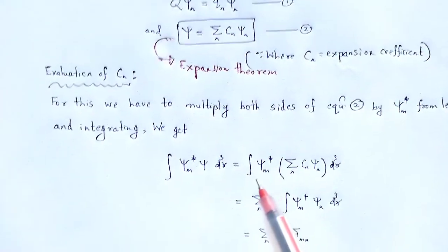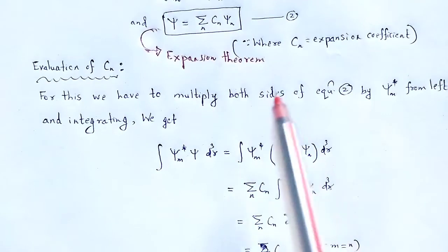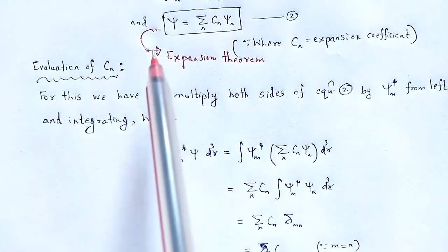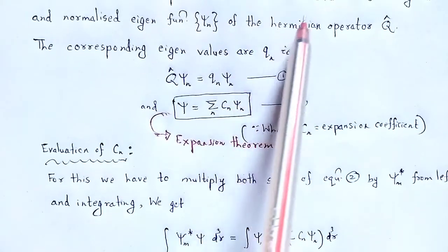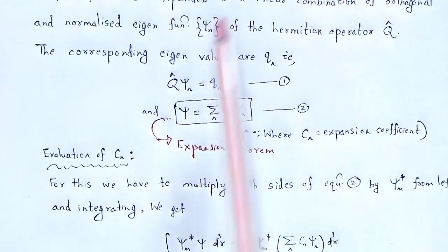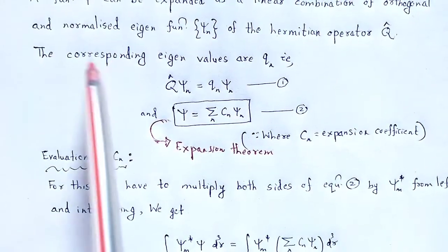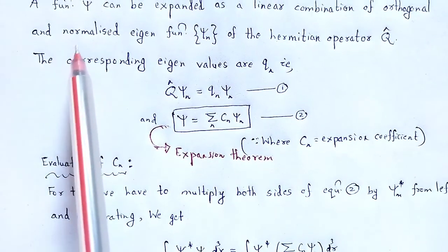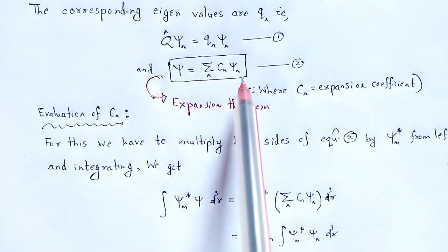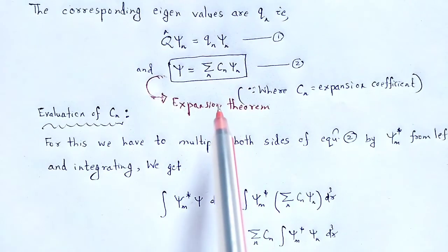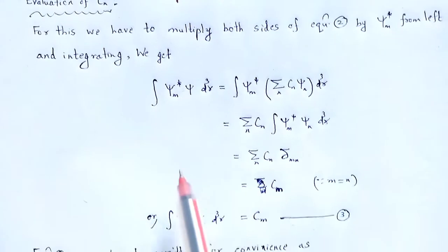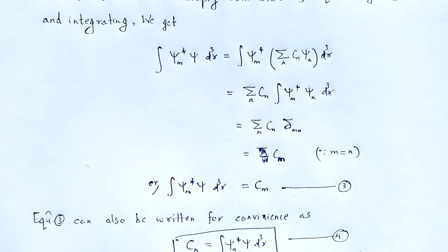Through this, we expand any kind of wave function by the linear combination of orthogonal and normalized eigenfunctions. With the expansion theorem, we also see the evaluation of the expansion coefficient C_n.